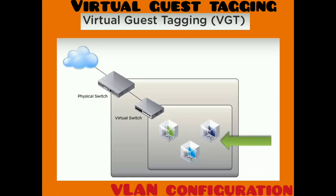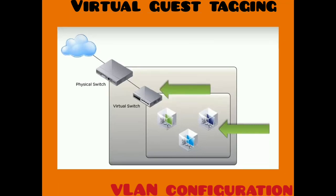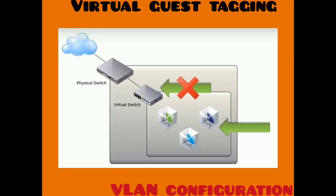For Virtual Guest Tagging (VGT), all VLAN tagging is performed by the virtual machine. You must install an 802.1Q VLAN trunking driver inside the virtual machine. All VLAN tagging is performed by the virtual machine using the trunking driver inside the guest. VLAN tags are understandable only between the virtual machine and the external switch. When frames are passed to the virtual switch, it will not be involved or aware of the operation — it only forwards the packet from the virtual machine.